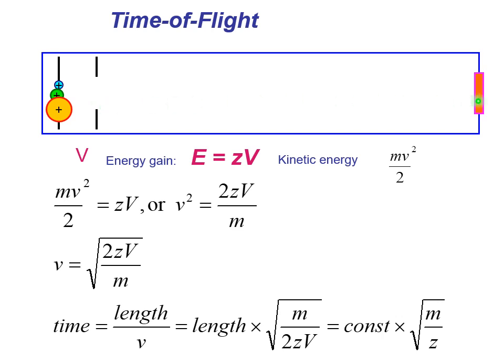The length is fixed, of course, and the same for each ion. Dividing length by velocity, we need to flip it, and then look: voltage is constant, 2 is constant, and length is the same for everything. So time will be a constant multiplied by square root of the ratio m/z. That's what we measure. So ions with larger mass will be slower.